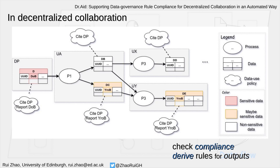The issue becomes larger if we consider a decentralized collaboration environment, where the data users are from different institutes. They may collaborate closely or they may not. As a result, they may use data from previous users, or they may fetch data directly from the original data source, or they may combine data from previous users.